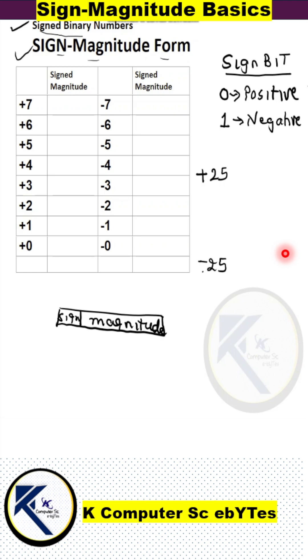Let us find out the representation of plus 25 and minus 25 in signed magnitude form. The magnitude of the value 25 in its pure binary form is 11001.